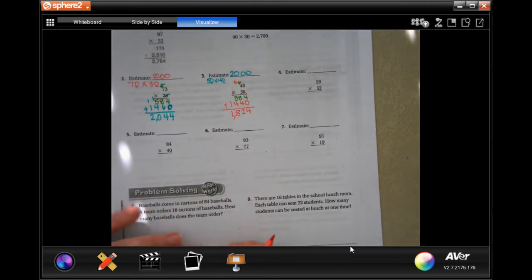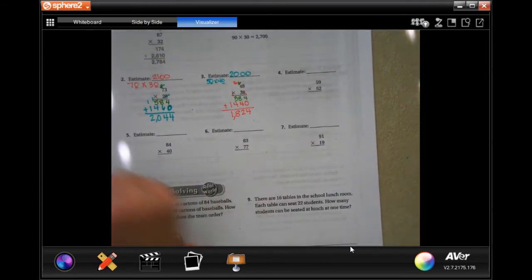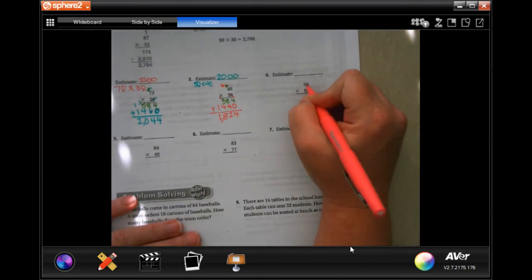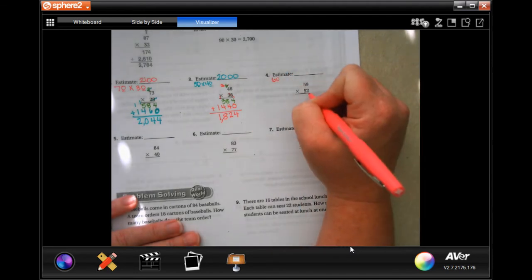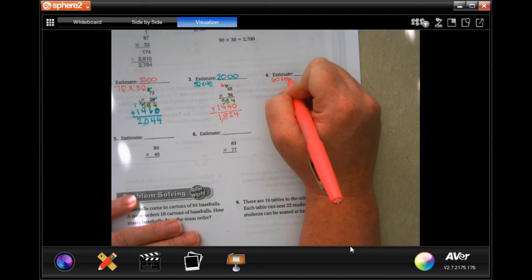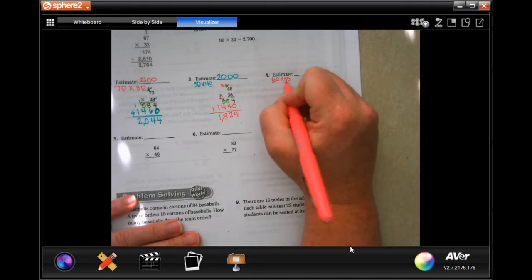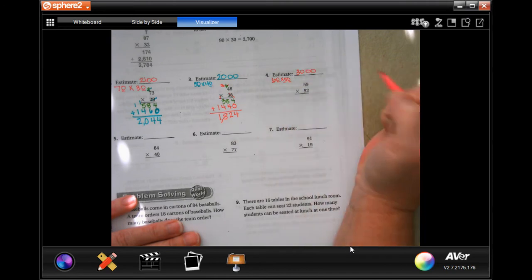Not so bad. We're going to do one more. Estimate: 59 is going to round to 60, and 52 is going to round to 50. 6 times 5 is 30, and then we're going to add on those two zeros.